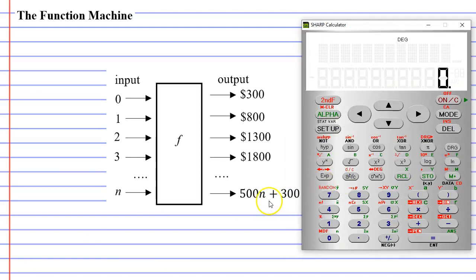I'm going to actually test this using a calculator. Let's look at our input of 3. It should have an output of 1,800. So let's take that 3, our input, multiply it by 500, times 500, and then add 300. And we get the output of 1,800.